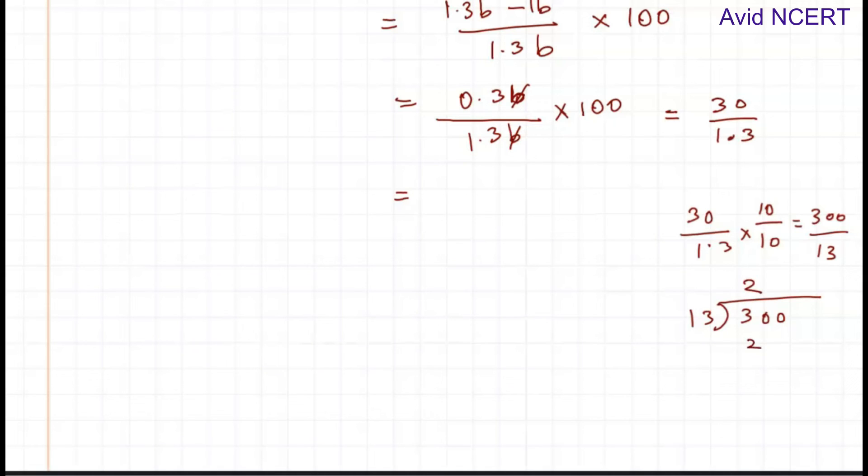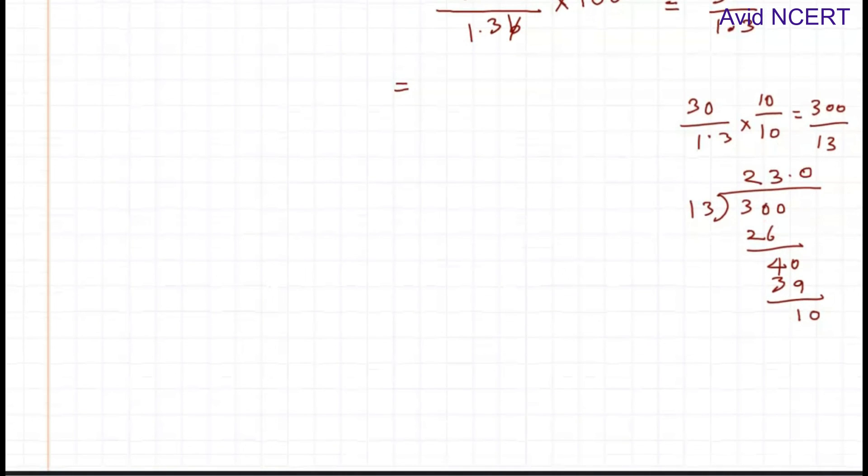13 times 2 is 26, the difference is 40. 13 times 3 is 39, the difference is 1. Place a decimal point, add a zero. 13 doesn't go into 10, so it's 0. Add another 0. 7 times 13 is 91, difference is 90. 6 times 13 is 78, difference is 12. It keeps going, so we can stop at 3 decimal places.